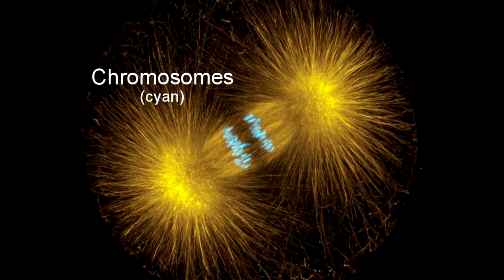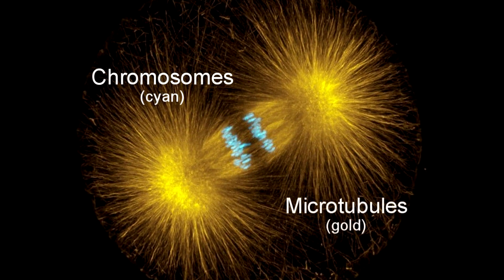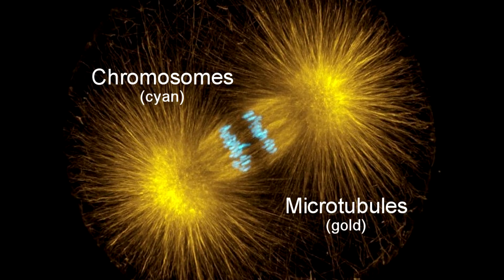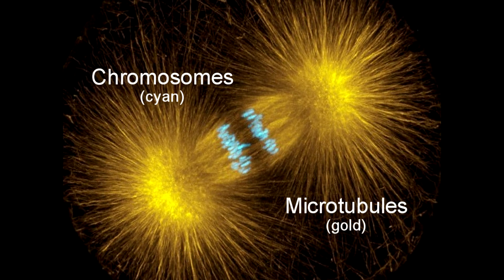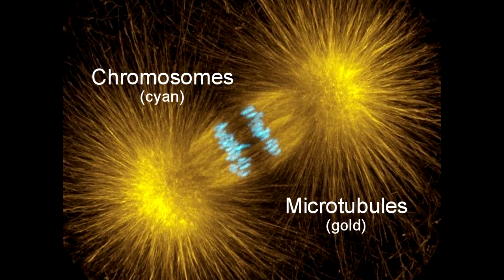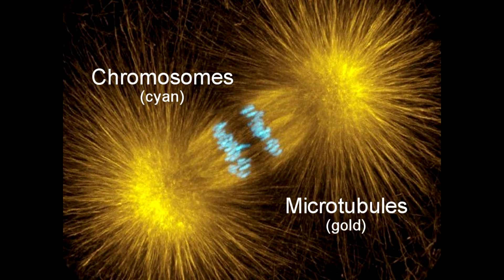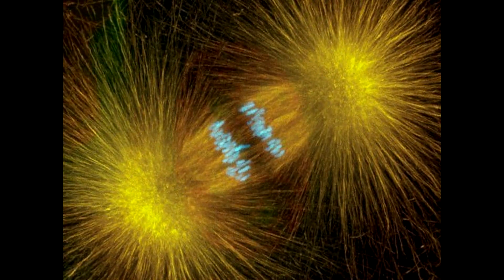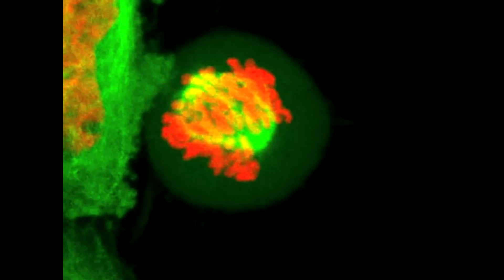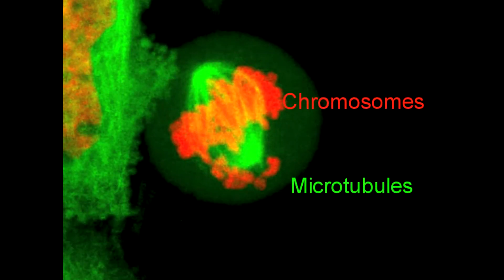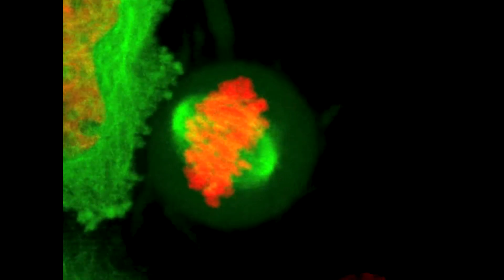Microtubules also play an important role in the movement of chromosomes during cell division. They anchor to structures called kinetochores on each chromosome, and microtubules shorten to pull chromosome pairs apart. This video shows a human cell with microtubules in green and chromosomes in red as it completes the process of cell division.